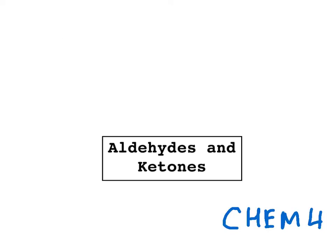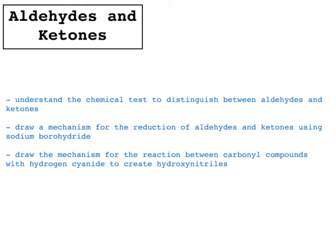This video is on aldehydes and ketones. Our aims are to know the chemical test that distinguishes between aldehydes and ketones and understand why it distinguishes between them, to draw a mechanism for the reduction of aldehydes and ketones using sodium borohydride (NaBH4), and to draw the mechanism for the reaction between carbonyl compounds and hydrogen cyanide to create hydroxynitriles.